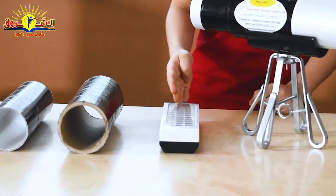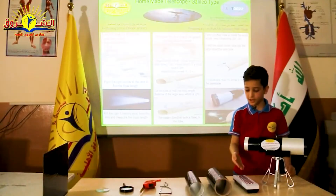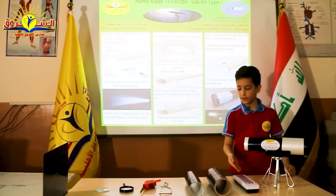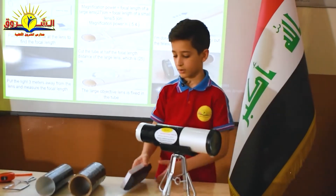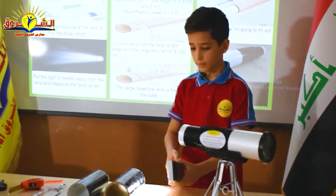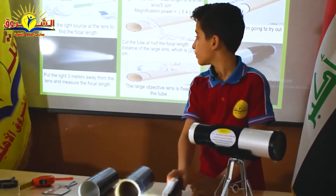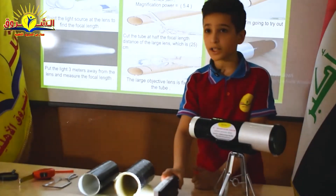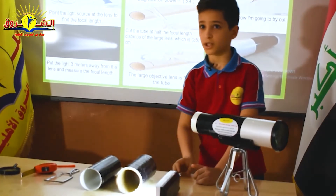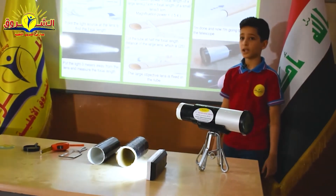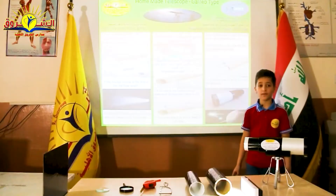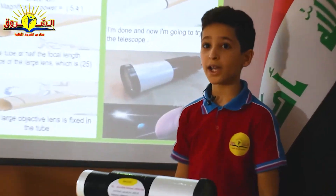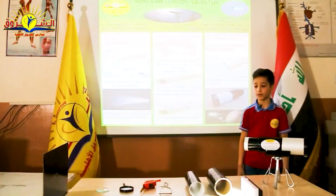Find the light source. Add the lens to find the focal length. Put the light three meters away from the lens and measure the focal length. The higher the focal length, the greater the magnification power.